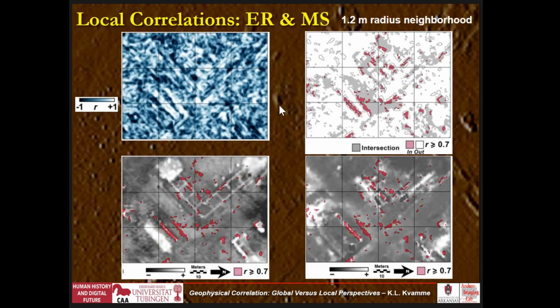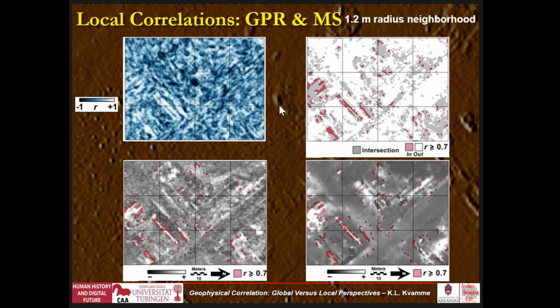Let's look at the other data sets. Here's the correlation map between earth resistance and magnetic susceptibility, the Boolean intersection in gray of the highest 50% for both modalities, and in red the high correlation places — showing high correlation with robust anomalies in both modalities. Then the final one was GPR and magnetic susceptibility: the correlation map, the intersection of robust anomalies in gray, and then the intersection with high correlation in red, superimposed on the base images to show where high correlation and robust anomalies occur.